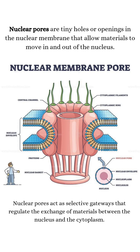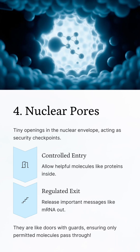Nuclear pores. Nuclear pores are tiny holes or openings present in the nuclear envelope. They are like checkpoints on the walls — they control what goes in and out of the nucleus. They let in helpful molecules like proteins and let out important messages like mRNA, so only the right molecules with permission can pass through.